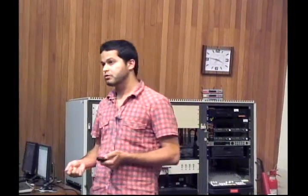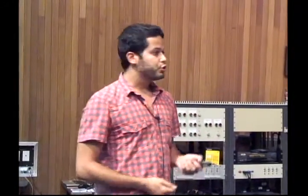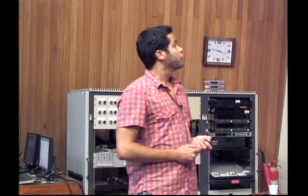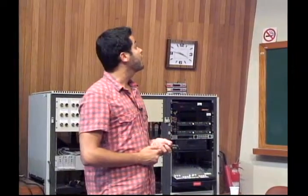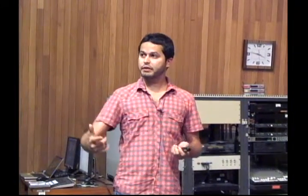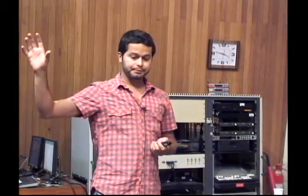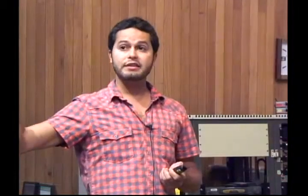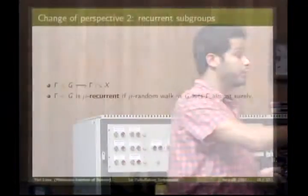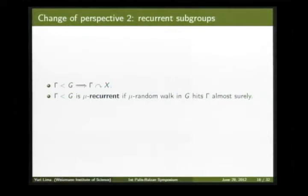You have a group and you have a measure, so you have a random walk defined on the group — at every step you choose according to the probability μ which increment you take. In this situation, you can define a subgroup Γ as recurrent if this μ-random walk hits Γ almost surely. This is the other perspective change: instead of looking at the phase space, you look at the maps acting on this space and try to recover what G has.